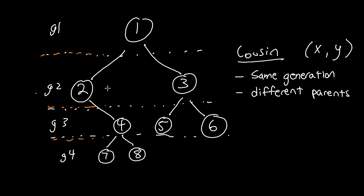For example, 2 and 3 cannot be cousins because they share the same parent 1, but 4 and 5 can be cousins, 4 and 6 can be cousins, but 4 and 7 can't be cousins because they're in a parent-child relationship. So that's cousins.